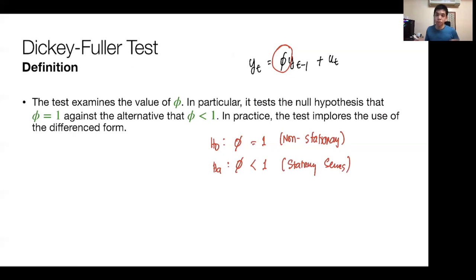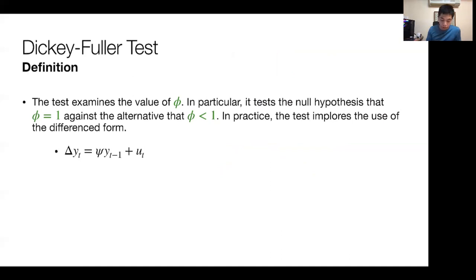Now how is the test structured? It employs the use of the difference form of the model. We discussed the concept of differencing, so delta YT equals YT minus YT minus 1. So in practice, you get this difference form here.